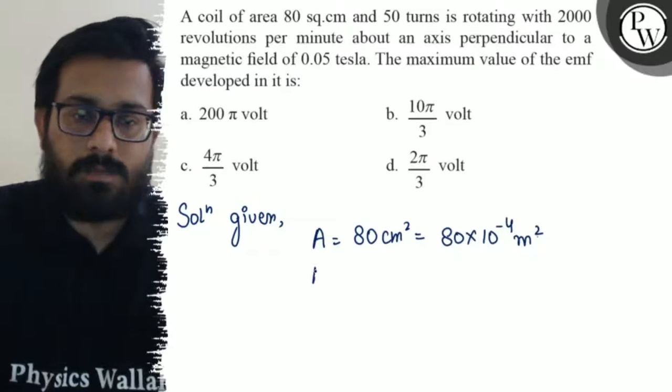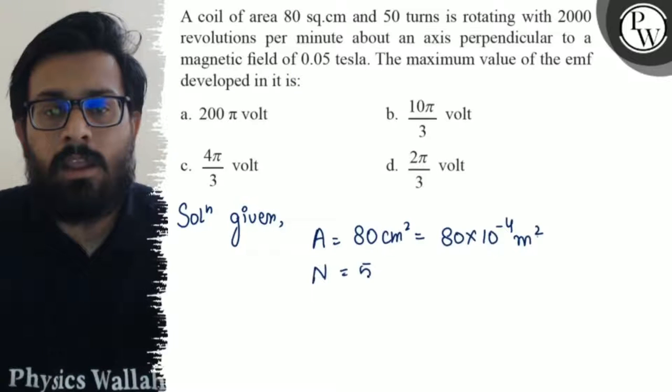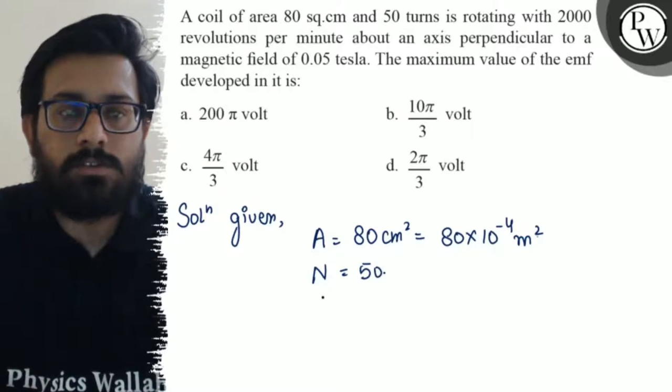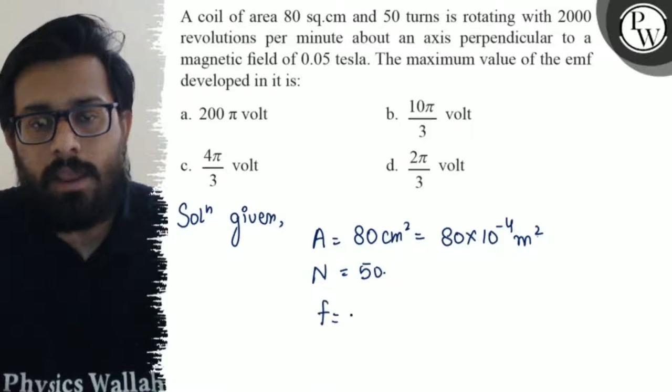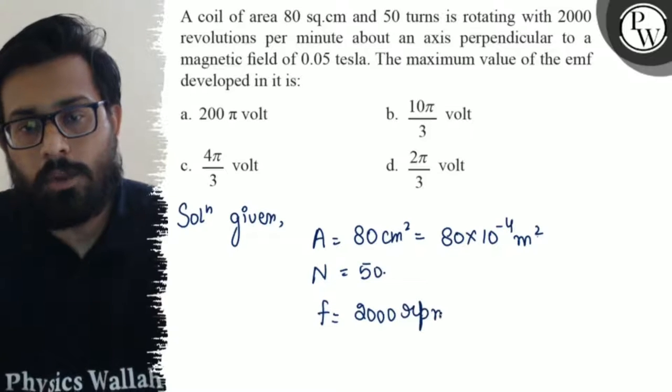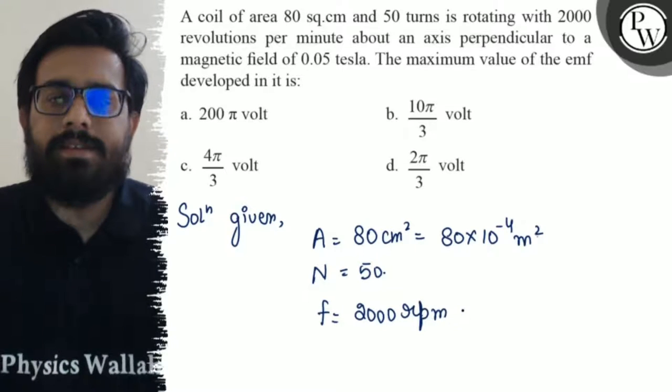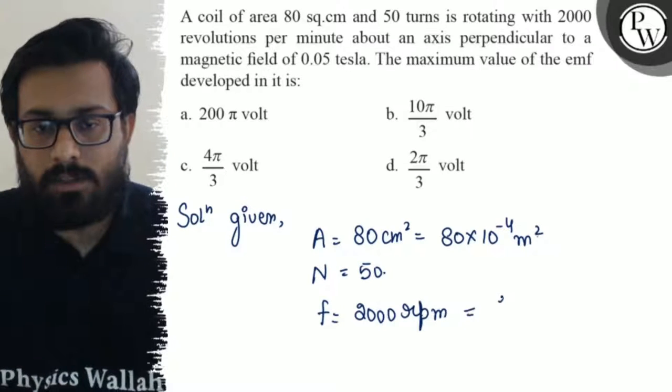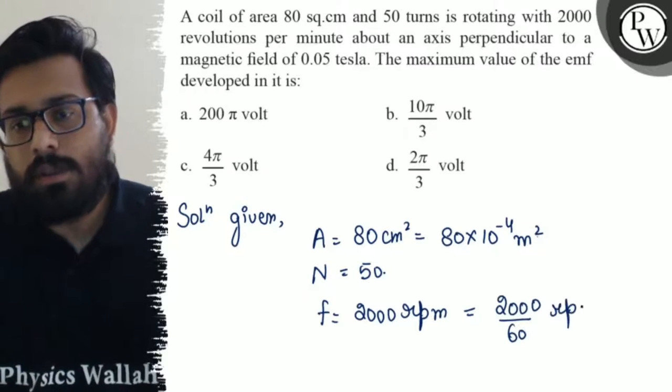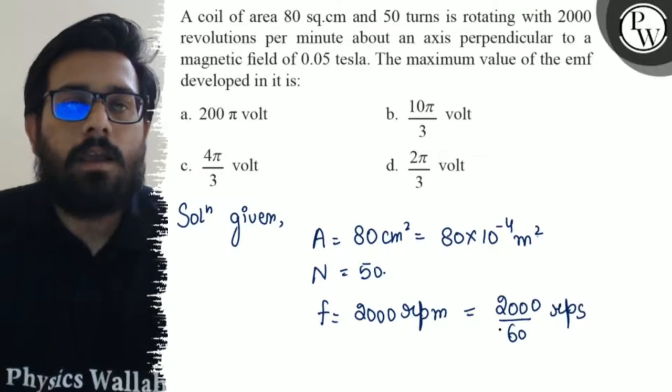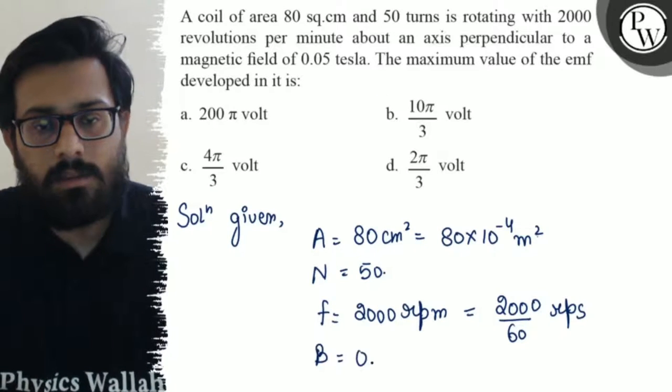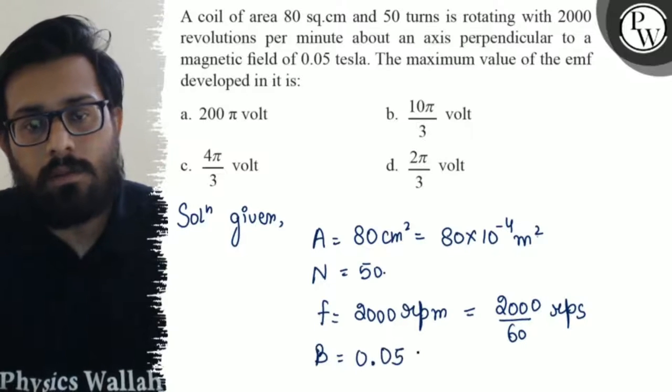Number of turns is also given as 50. Along with that, it's rotating with 2000 revolutions per minute. So actually frequency is given as 2000 rpm. Now this is in minutes, we need to convert to seconds, so this can be written as 2000/60 revolutions per second. Additionally, the magnetic field given in the question is 0.05 tesla.